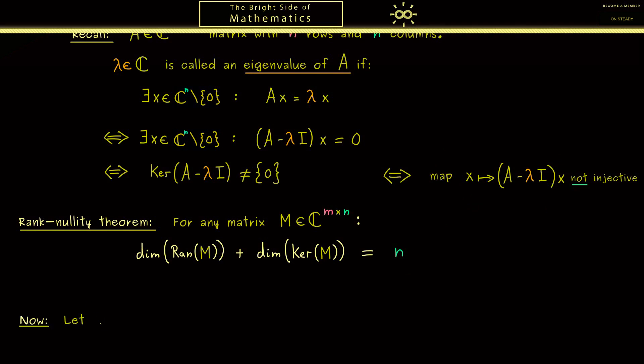Now for the rest of the video, let X be a complex Banach space, and T: X → X should be a bounded linear operator.